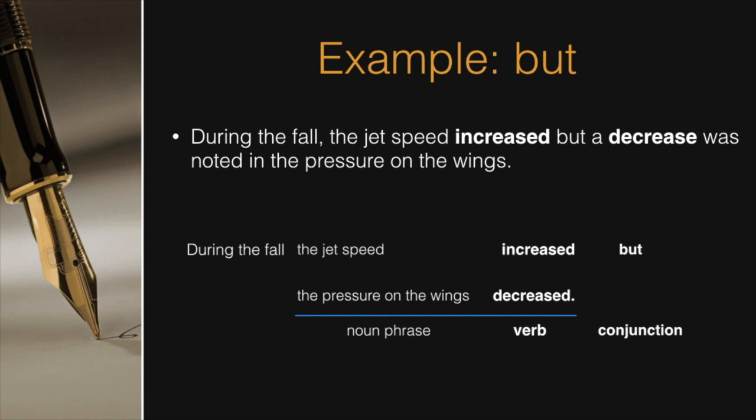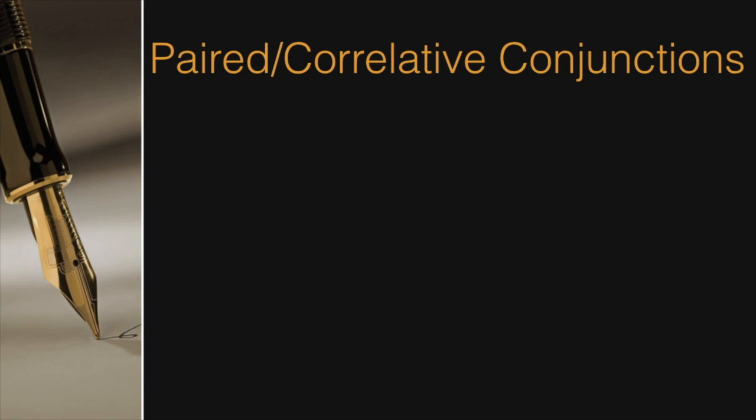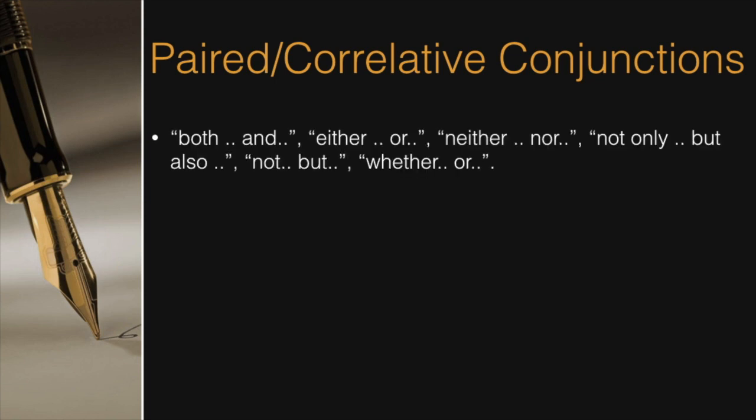Note we can use another conjunction, and, and the same reasoning still applies. Parallel forms often get mixed up when we use paired or correlative conjunctions. Examples of these conjunctions are both and, either or, neither nor, etc. Let's now see how parallel forms get mixed up with the paired conjunctions.